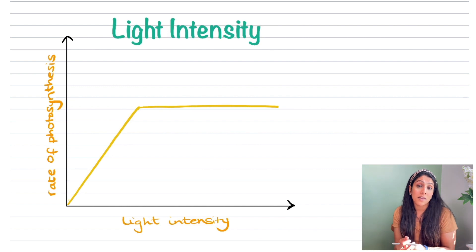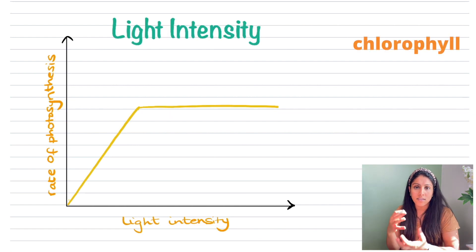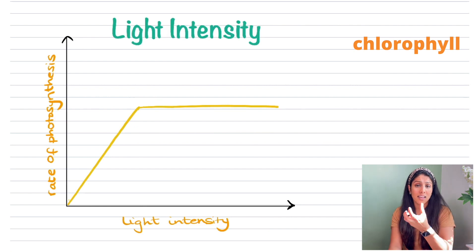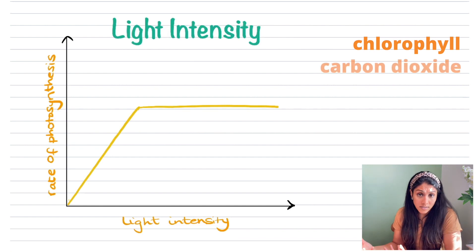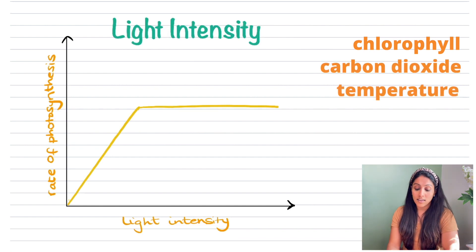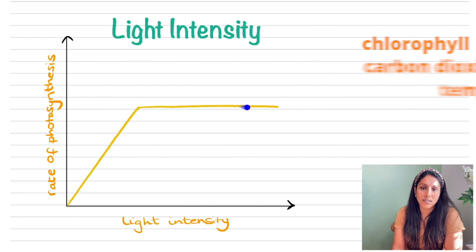For example, the plateau might be caused by the limited amount of chlorophyll in the plant — if there's only a certain amount of chlorophyll then there's only so much light intensity it can use. Another factor could be the carbon dioxide levels or the temperature. These could be the limiting factors preventing the rate from rising further.